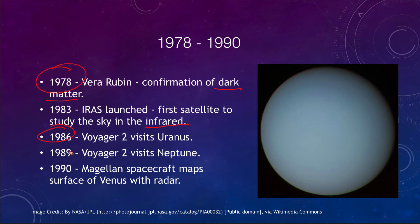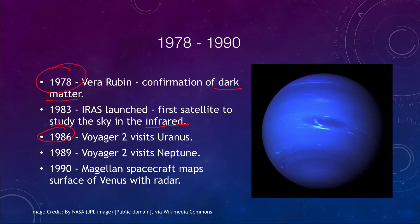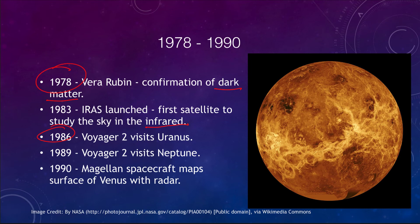In 1986, Voyager 2 visited Uranus for the first and only time, allowing us to study its rings up close. A couple of years later, Voyager 2 reached Neptune — the first and only close-up study of Neptune. And in 1990, the Magellan spacecraft mapped the surface of Venus using radar, since visible light cannot penetrate the clouds, finally giving us a detailed understanding of what the Venusian surface looks like.